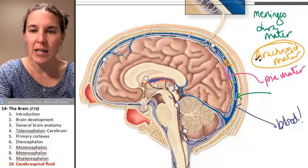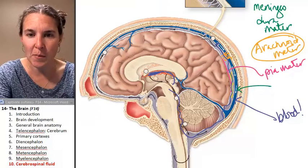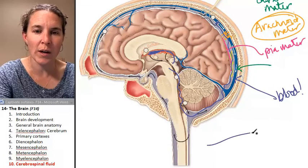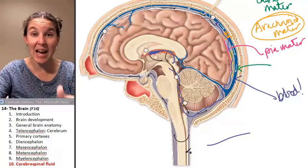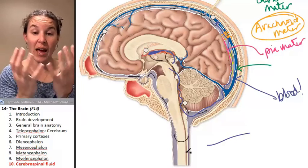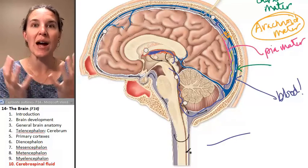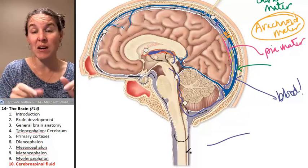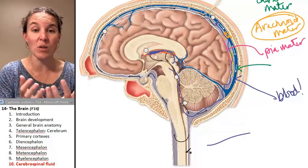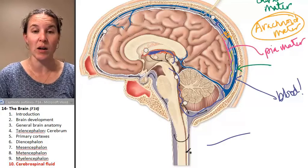If you look at the bottom of the brain, you can see that the cerebrospinal fluid can also travel down through the outside, surrounding the spinal cord, because we have dura mater in our spinal cord as well — so it can circulate there too.